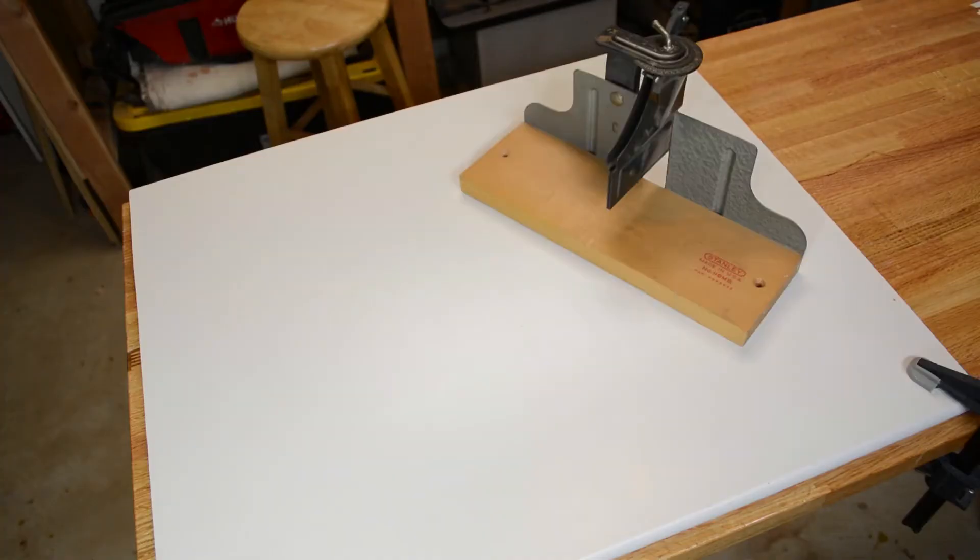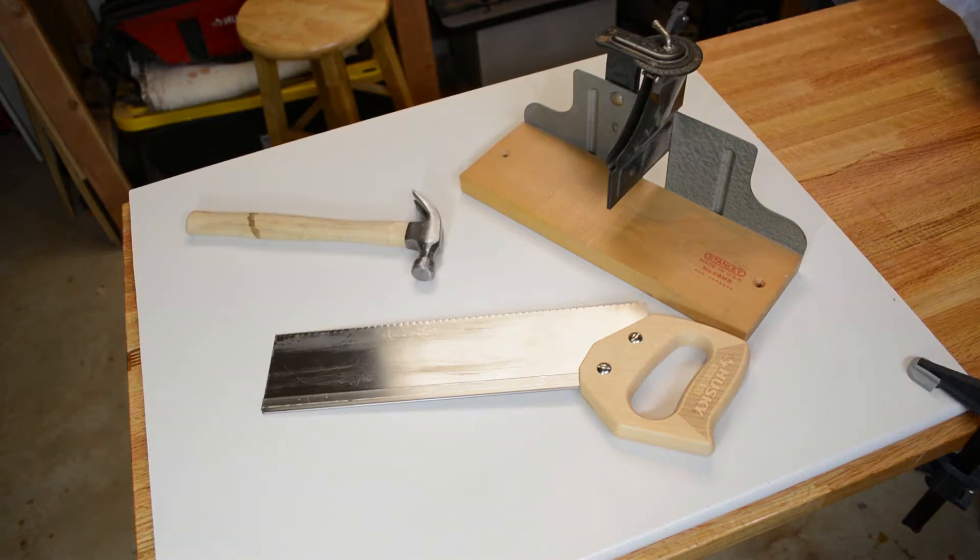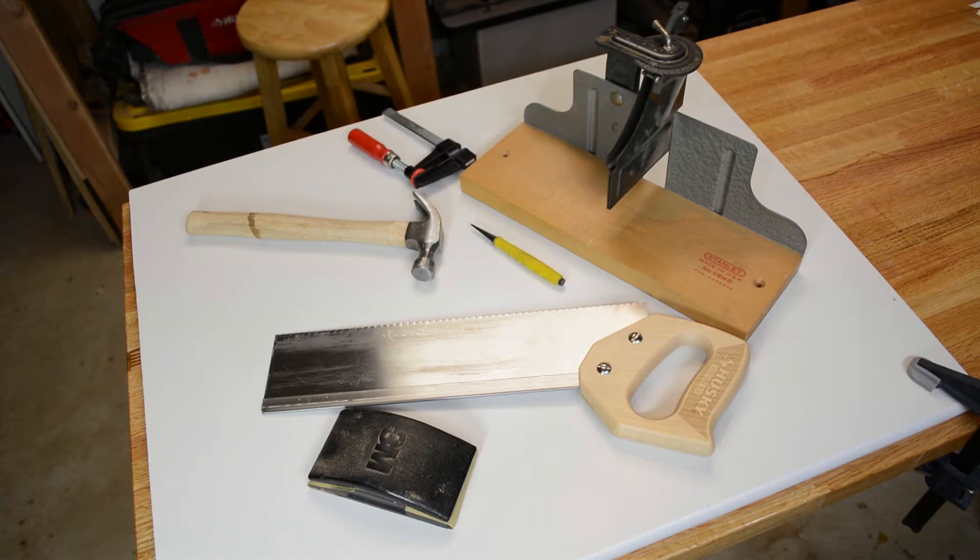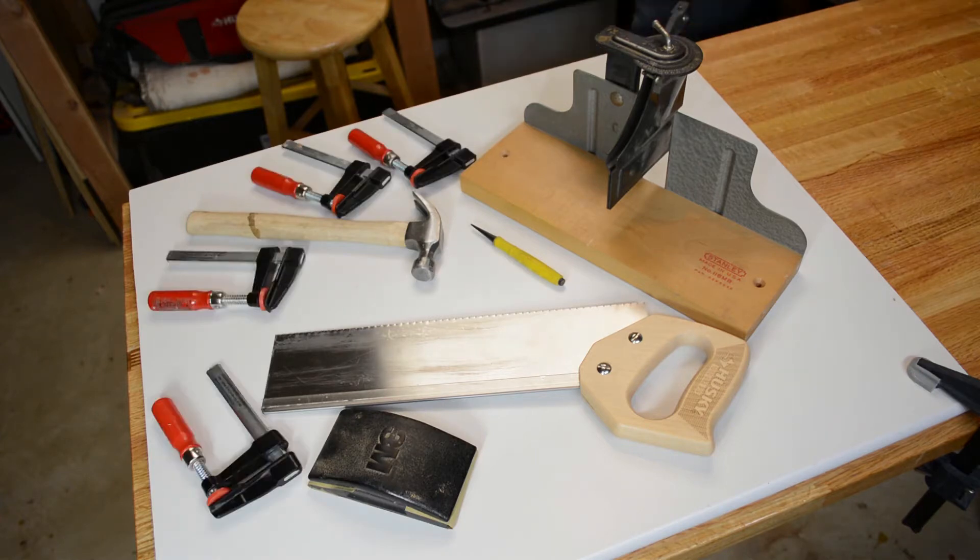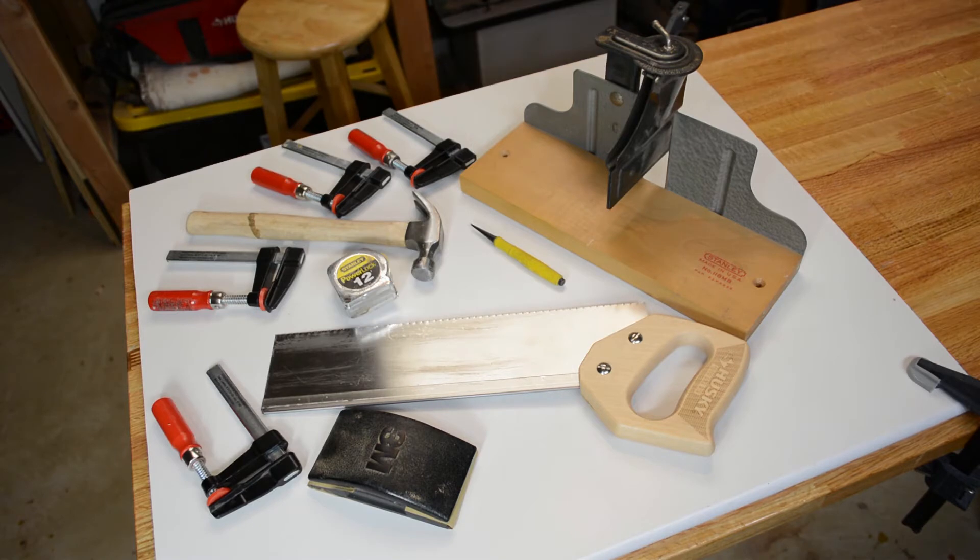So when I say hand tools, I mean hand tools. We're going to start off with something called a miter box and saw, just a small hammer, a nail set, a sanding block, some clamps possibly,